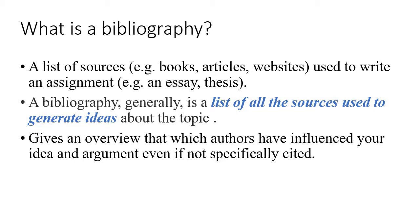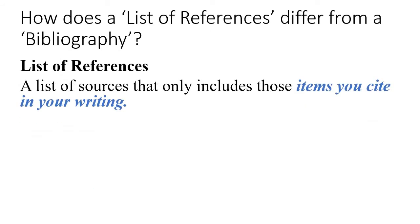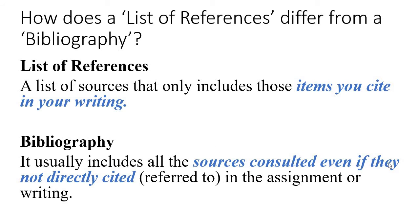It is not necessary that every source listed in the bibliography is directly cited in your writing. The core difference between a list of references and a bibliography is this: a list of references includes only those items that you have explicitly cited in your writing, whereas bibliography includes all the sources consulted, even if they are not directly cited or referred to in the assignment.